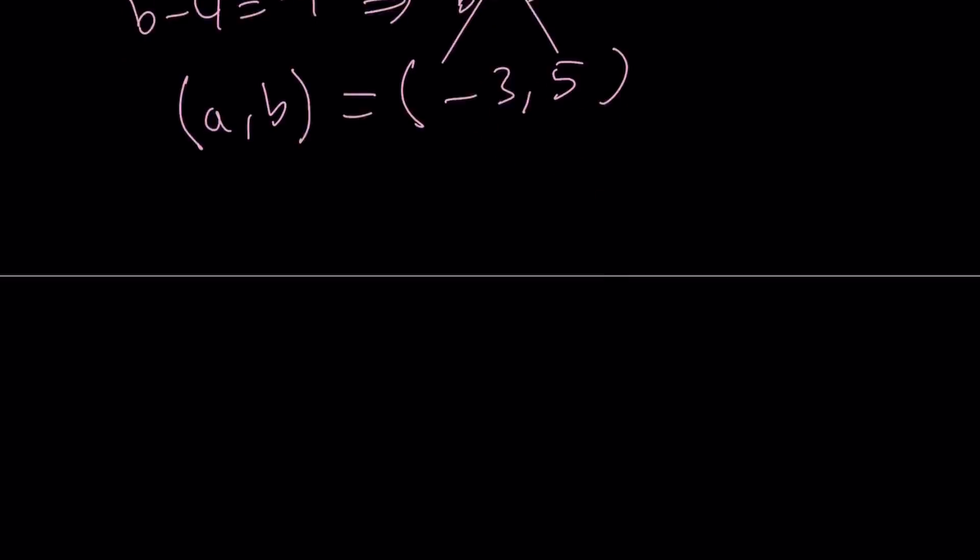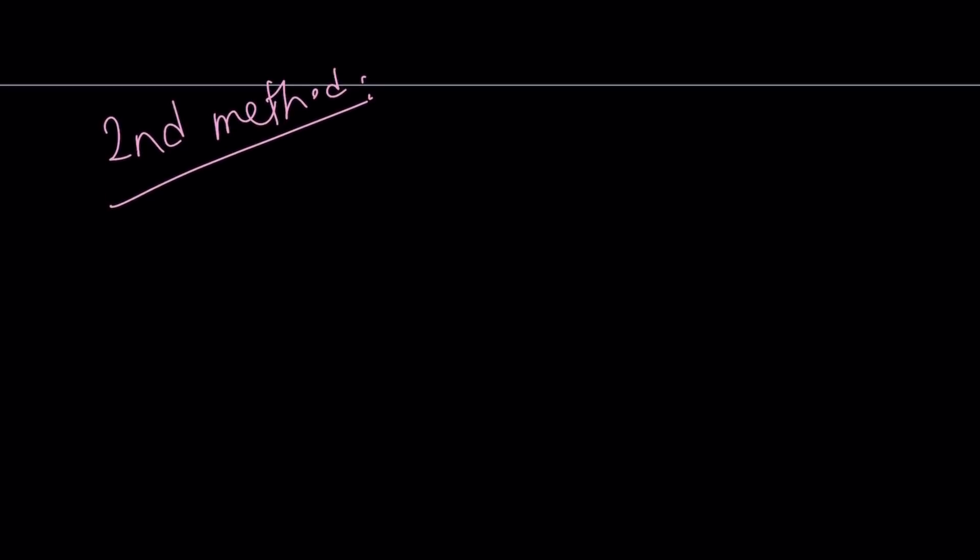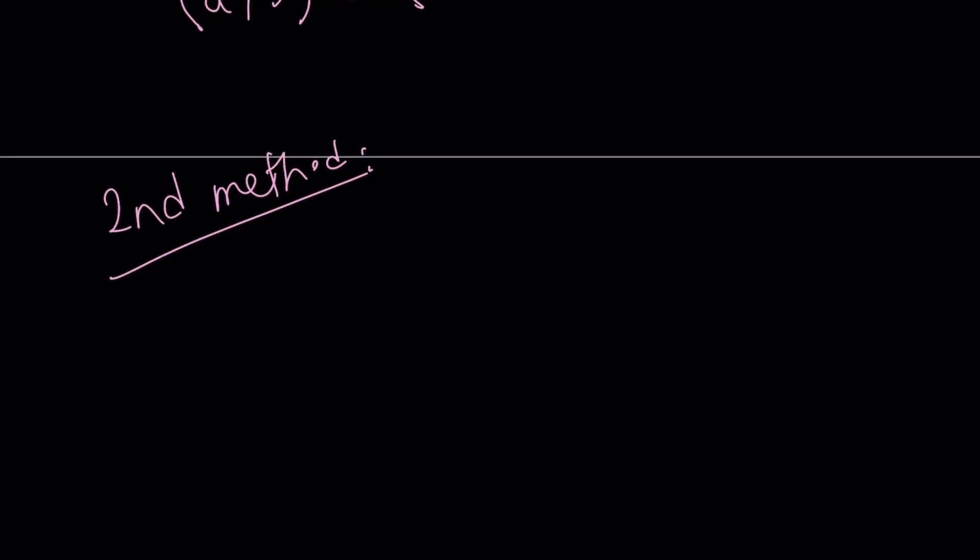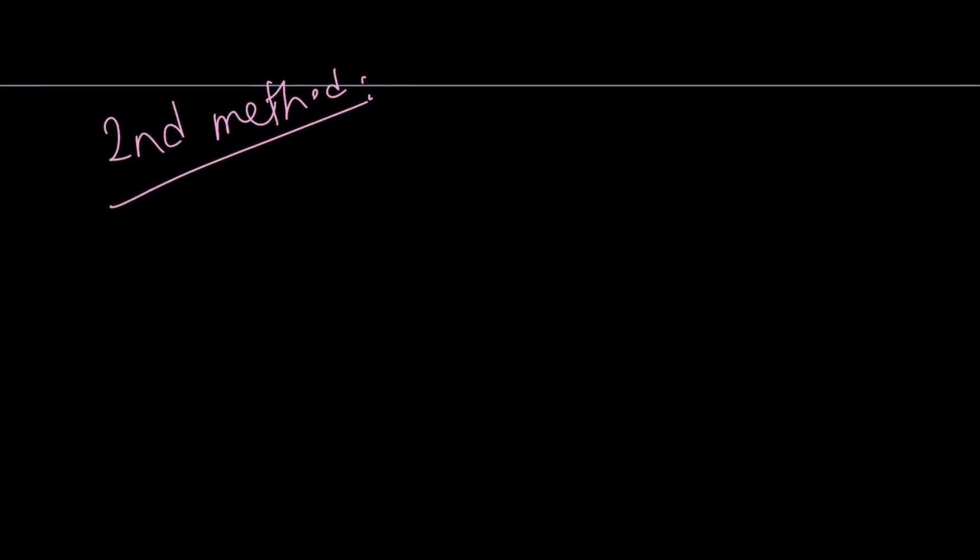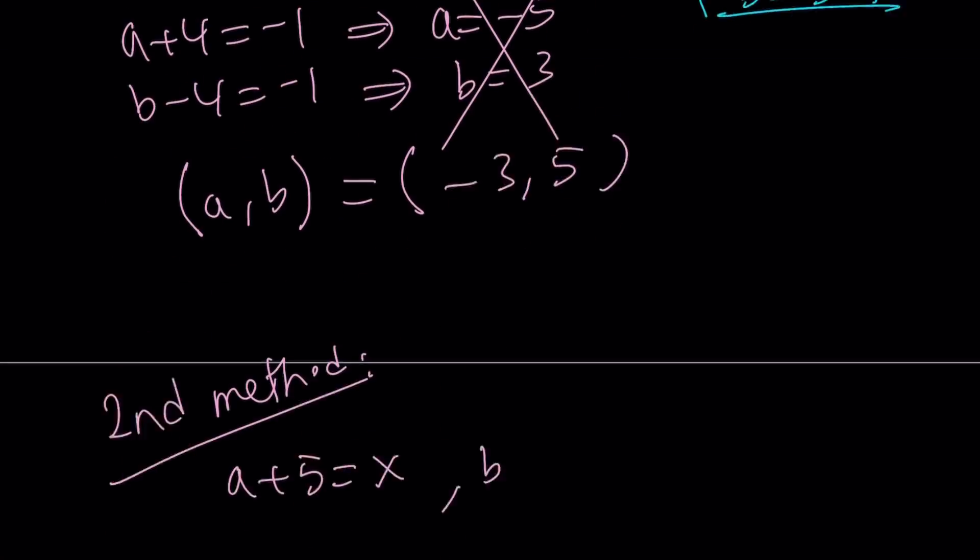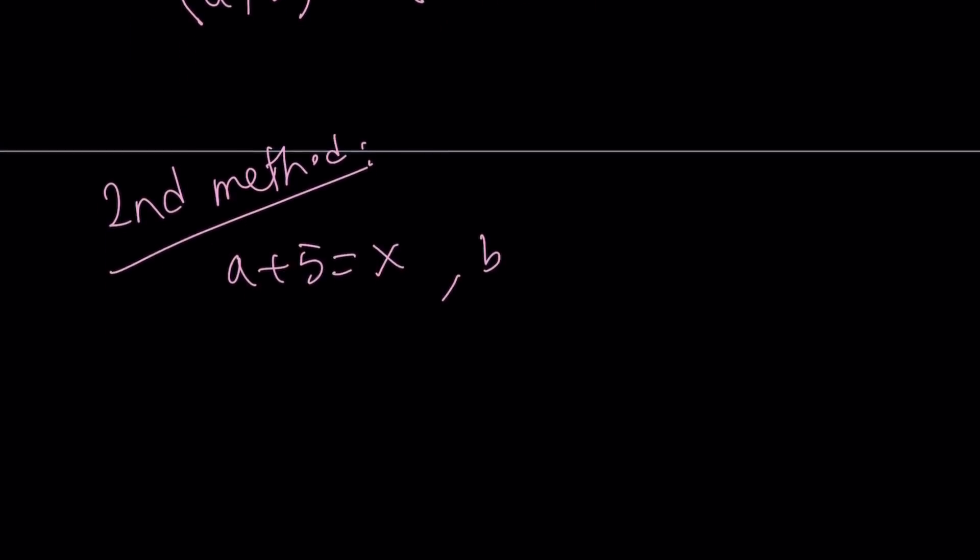Let's go ahead and talk about the second method now. For my second method, I'm going to use substitution. And that simplifies the process. It's kind of like the same solution, but I'm not going to use the exact same steps. So I'm going to set a plus 5, which is in one of the denominators, I want a plus 5 to be something. How about x? And b minus 3 to be y.